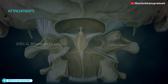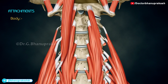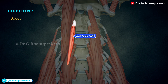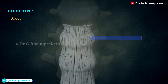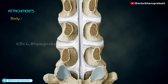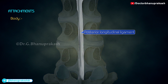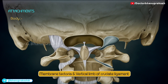At its apex, the dens provides attachment to the apical ligament. On each side below the apex it provides attachment to the alar ligaments. The anterior surface of the body receives insertion of longus colli and gives attachment to the anterior longitudinal ligament. The posterior surface of the body provides attachment to the posterior longitudinal ligament, membrana tectoria, and the vertical limb of the cruciate ligament.